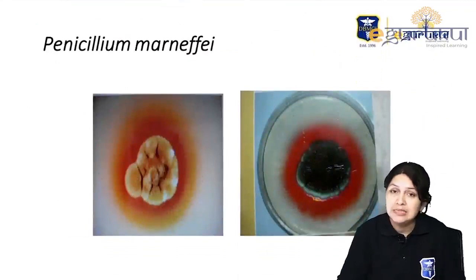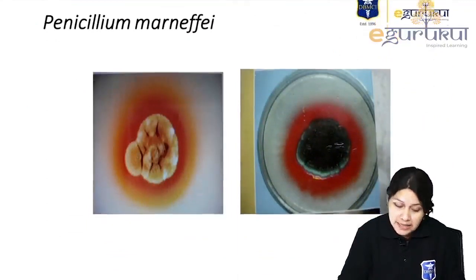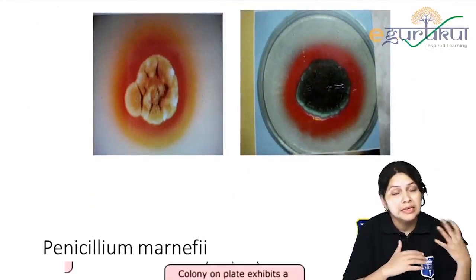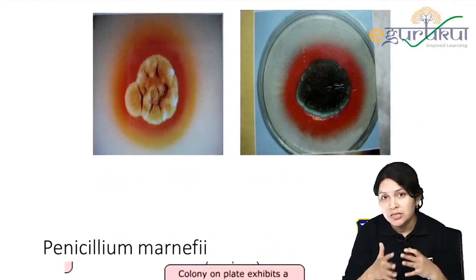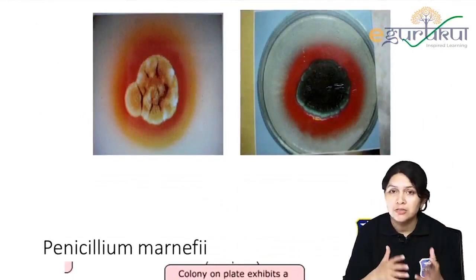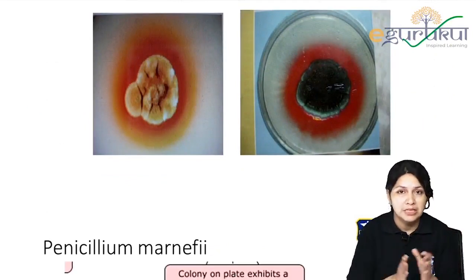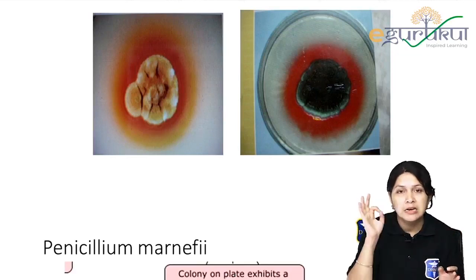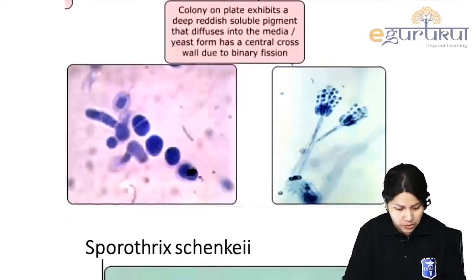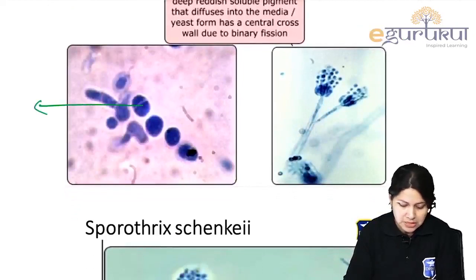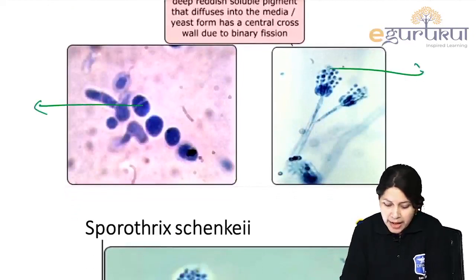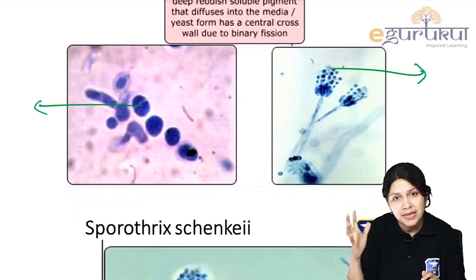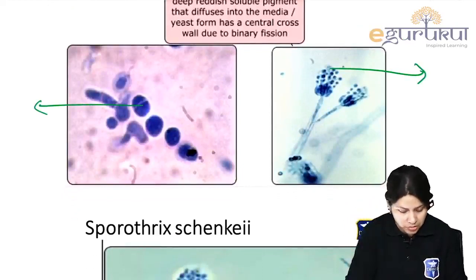The classical yeast form is an elongated yeast cell with a transverse septum, and the mold form shows typical hyphae with brush-like structures. Growth shows a red diffusible pigment. Combined with clinical history and cultural characteristics, these together give the diagnosis. Classical yeast with transverse septum and culture shows typical brush-like or broom-like structures.